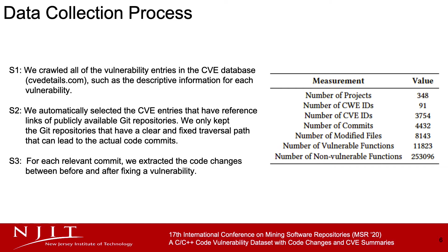For each relevant commit, we extract the code changes between the before and after states of the fixed vulnerability. Finally, we use the code change information to recover the vulnerable version of a method. We identified 4,432 code commits relevant to vulnerabilities, spanning 91 CWE types. In total, we obtained 8,143 modified files and 11,823 vulnerable code changes.